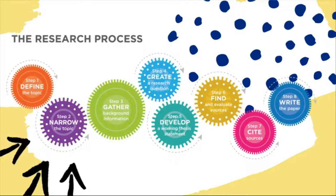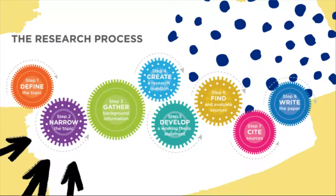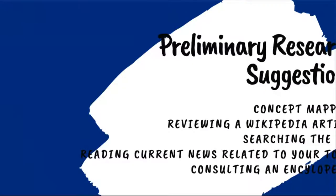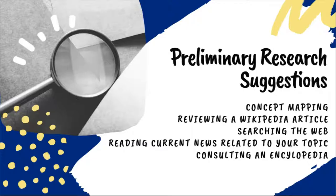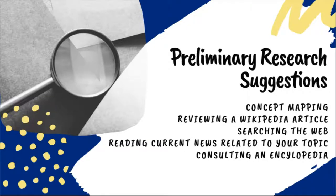The ability to develop a good research topic is an important skill. An instructor may assign you a specific topic, or they might ask you to select your own topic of interest. If you are unfamiliar with a topic that you are being asked to write about, you might have to do some preliminary research to better understand how to best approach your topic. Keep in mind that the sources you consult during this stage may not be appropriate to use in your final paper, but they can help you learn a little bit more about your topic.